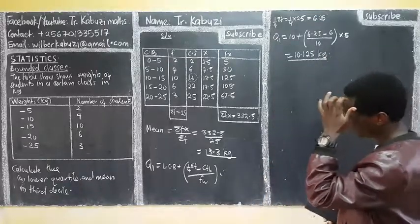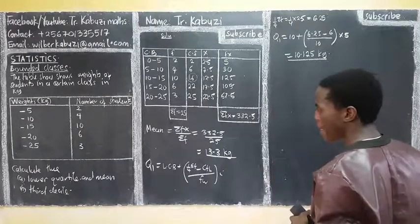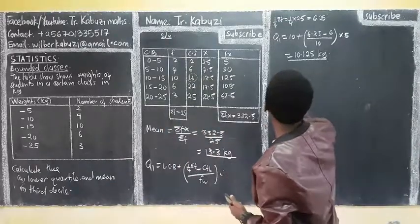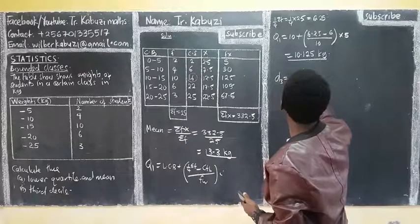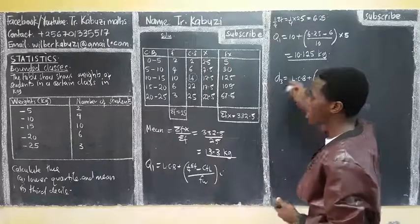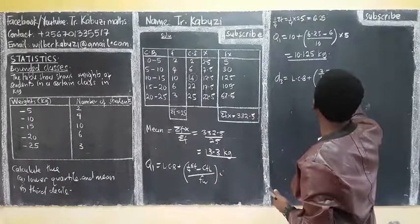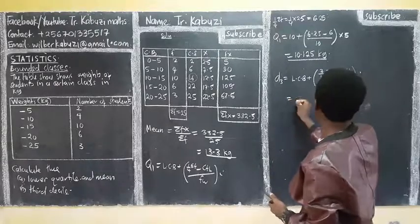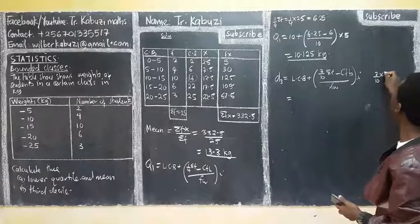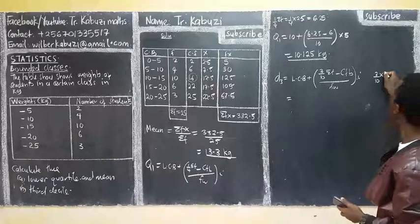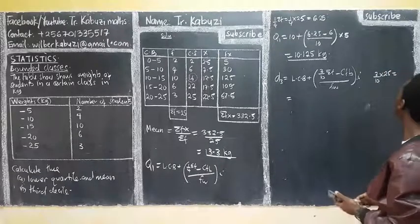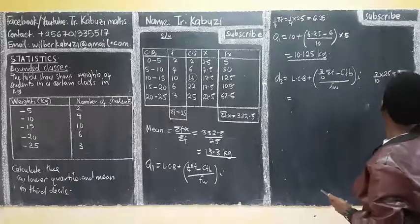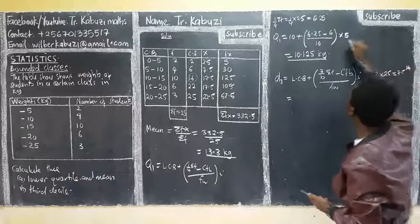Now when we come to the third decile. So D3. We said it is the same ones. Lower class boundary. Then plus. Now the one to the third. So we said 3 over 10 sum F minus frequency before, over frequency within, times I. So we first calculate 3 over 10 times. Now our summation of f is 25. And this one is going to be 2.5 times 3, which is 7.5. Which is the position that we are looking for. So now, you come whenever I read this. You come in a column of cumulative frequency. And you see, still, it is going to be here.